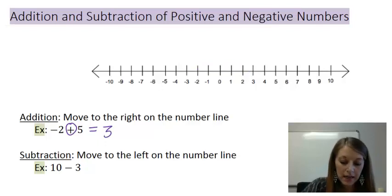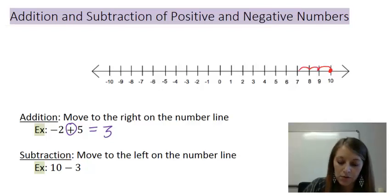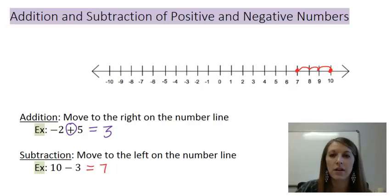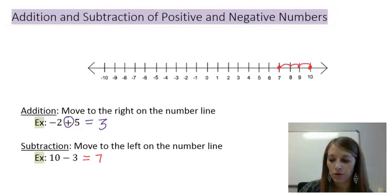The second example: if I start with 10 and I want to subtract 3 units, I move to the left 3 units, and that gives me this number here — I end up with a final answer of 7. Now these two examples were extremely easy ones, so let's see some more difficult ones.